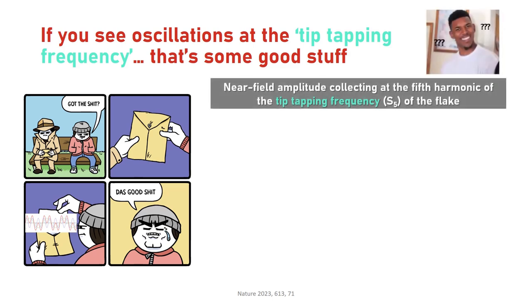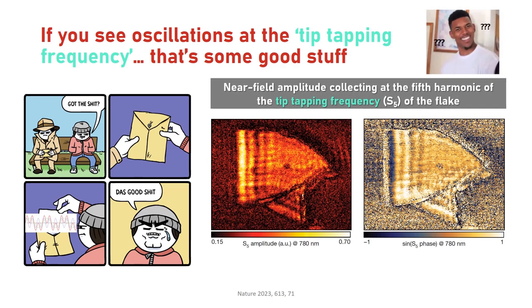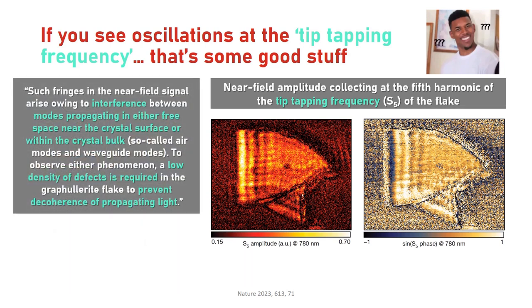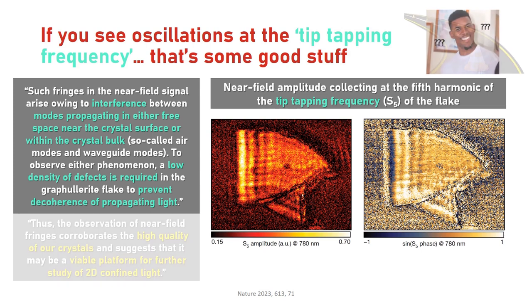They further showed that they had their hands on some really good stuff by observing systematic oscillations in near-field microscopy signals. I will explain it in layman's terms and really couldn't bother trying to understand what this tip-tapping frequency is about, kinda sounds like a dance. These oscillations which you can see by the shifting s5 amplitude in the pictures are coming from wave interferences within the crystal itself. This wave travel and the resulting oscillations can only happen if the material has low defects or impurities, allowing the waves to zoom around in an uninterrupted manner. You can think of impurities being obstacles to a car racing on a highway.